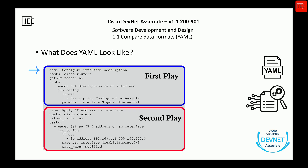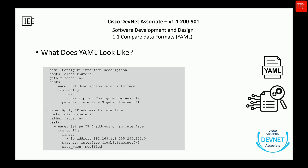The name is just a description for us humans, something that tells us what this play is about. The hosts key tells Ansible which devices it should target — in this case it's all devices under the cisco_routers group in your inventory file. Moving down, the gather_facts key is set to no. Normally Ansible tries to collect system facts before doing anything, but with network devices we usually don't need that and it just slows things down, so we turn it off.